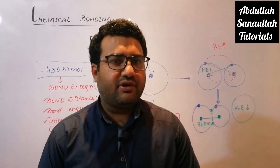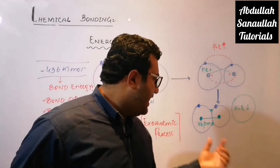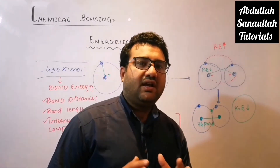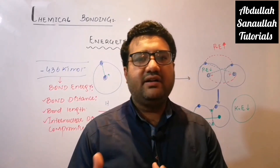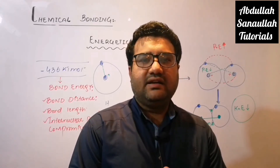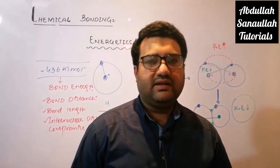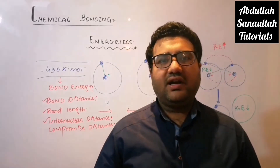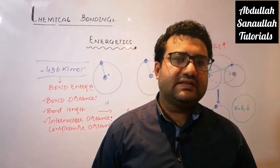One very important point: if you try to bring these two hydrogen atoms even closer than the 74 picometer distance, the attractive forces will be dominated by the repulsive forces. The repulsive forces will then dominate the attractive forces, and the system will move towards instability again. So the old concept is the octet rule, and in the new concept, bond formation is explained on the basis of its energetics.